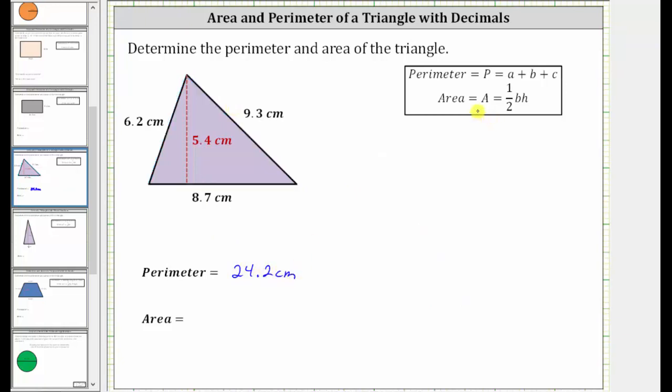The area of a triangle is equal to 1/2 base times height, where for our triangle, the base is 8.7 centimeters and the height is 5.4 centimeters. And therefore, the area of the triangle is equal to 1/2 times, again, the base,